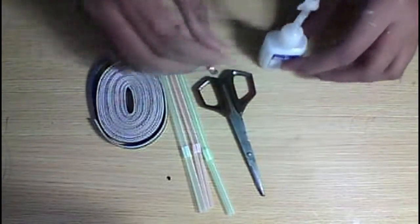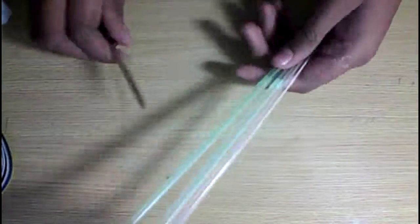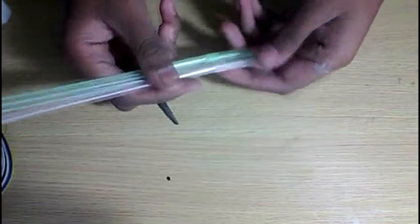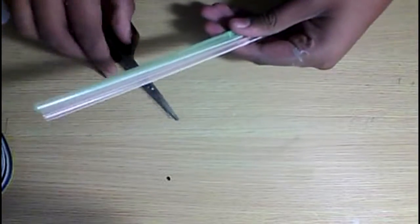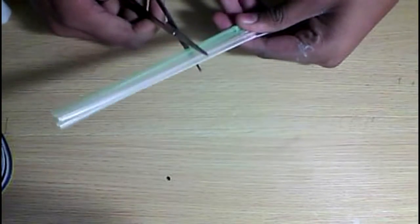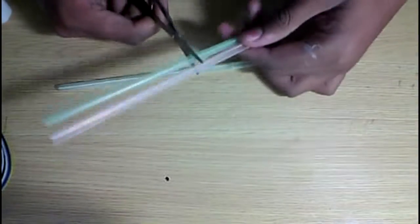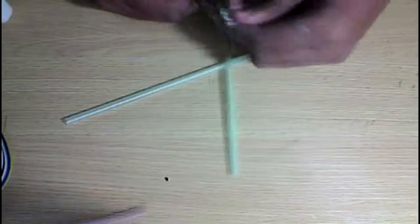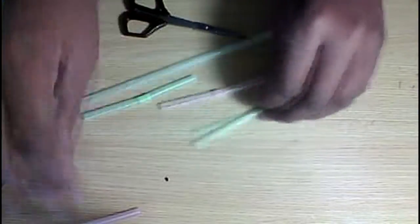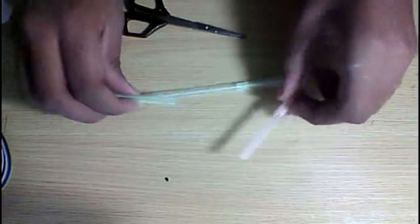So let's get started. First of all, cut the straws in the required size as shown in the video. We will only need the pieces with the bending joint.